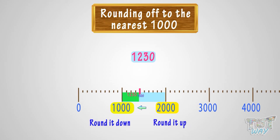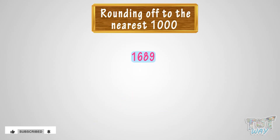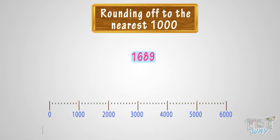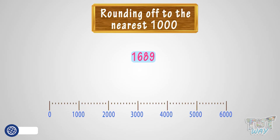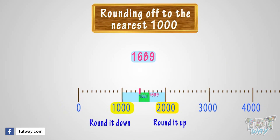Now let's take another example: 1689. We have to round 1689 to the nearest 1000. Where can you fit 1689 on this number line? It is somewhere between 1000 and 2000. As 1689 is above or after the 500 mark, so we will round it up to 2000.